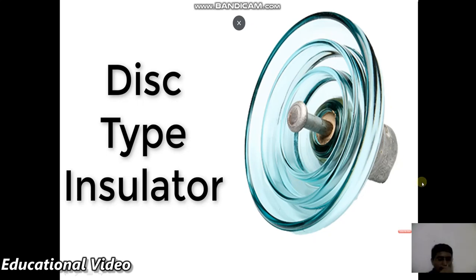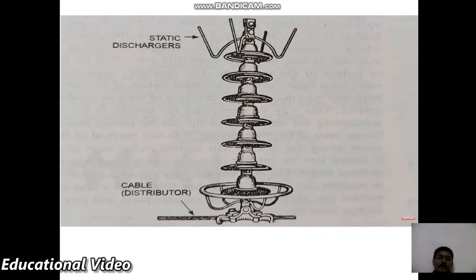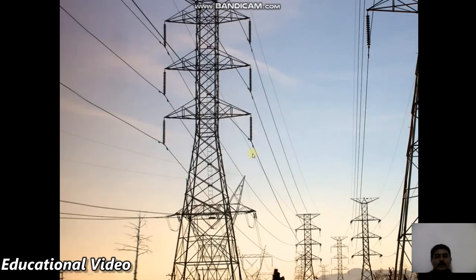Moving to disc type insulators, each disc provides insulation for approximately 11 kV. Depending on the voltage level required, the number of discs is increased. When multiple discs are connected together, they form a string. This is visible in the picture of a transmission tower where such a disc string can be observed.